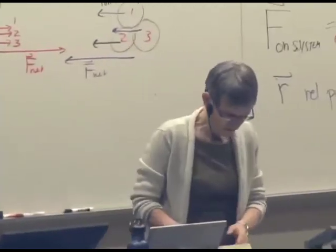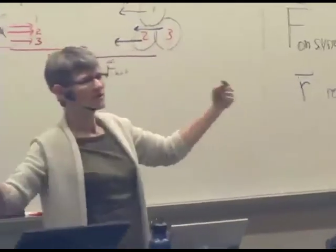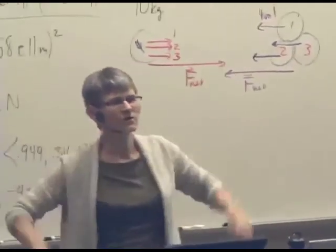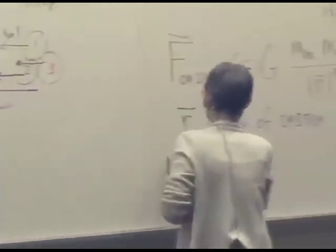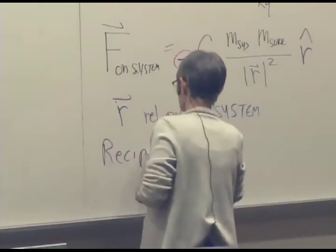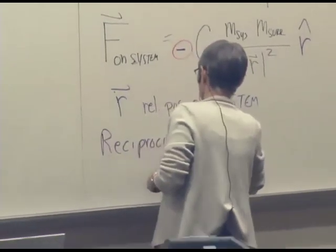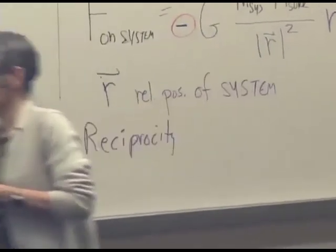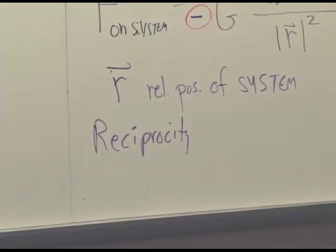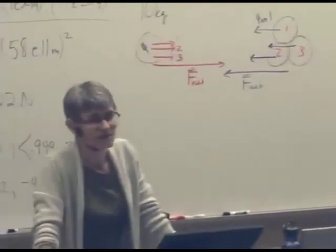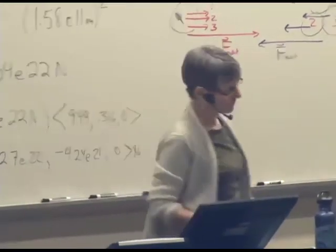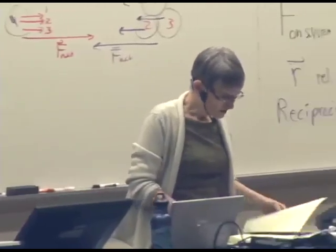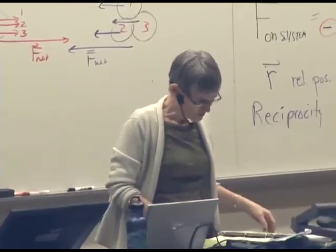So we can calculate gravitational forces. This property of equal and opposite forces is called reciprocity. It's true for gravitational forces. It's true for electric forces. It's not true for every possible force there is. In fact, we find that it's not true for magnetic forces, which don't actually act along the line between objects. So it's not always true.